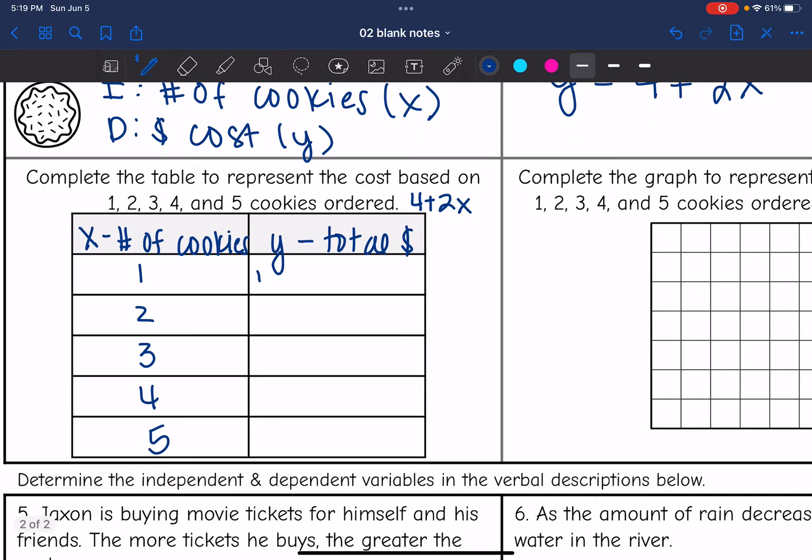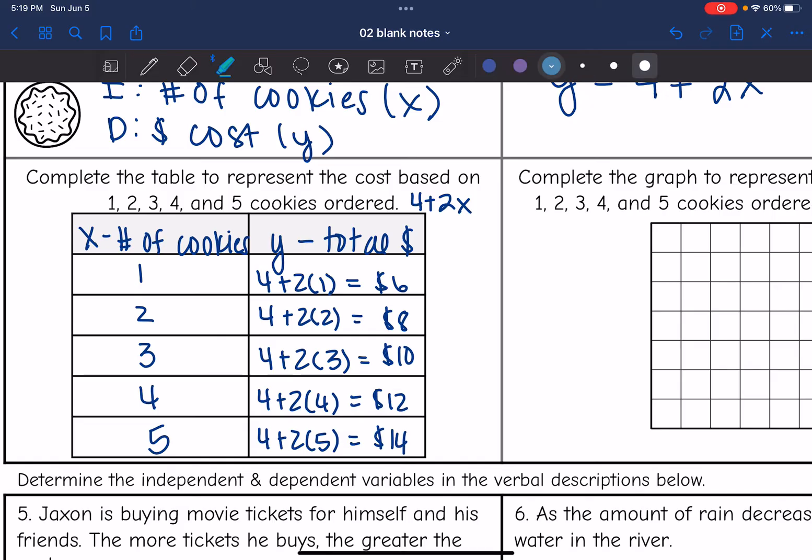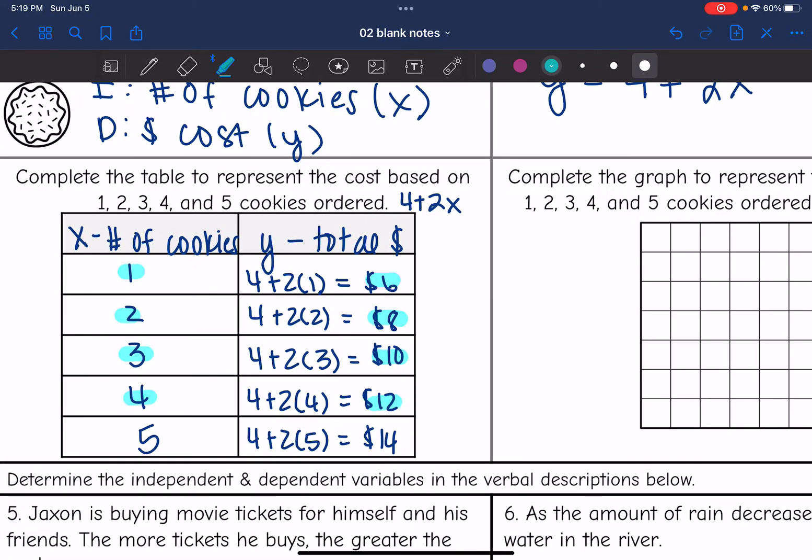So what I would do here is do 4 plus 2 times 1 to figure out the cost for one cookie, which would be 6. And then 4 plus 2 times 2 would be 8. 4 plus 2 times 3 would be 10. 4 plus 2 times 4 would be 12. And then 4 plus 2 times 5 would be 14. So there's the cost for one cookie, 2, 3, 4, and 5.